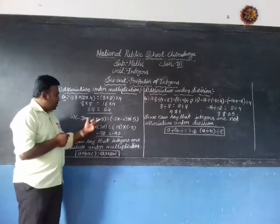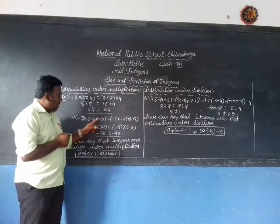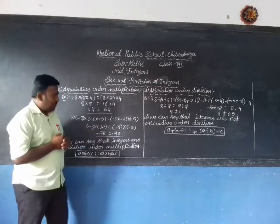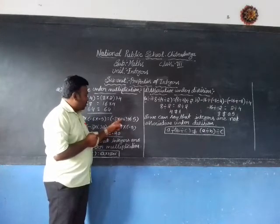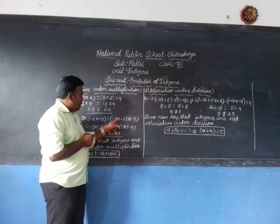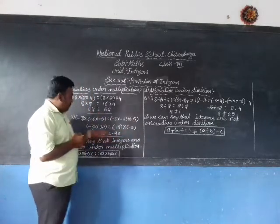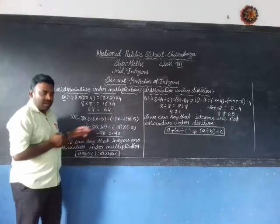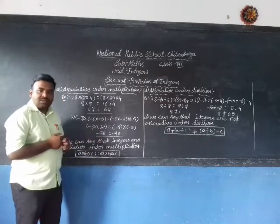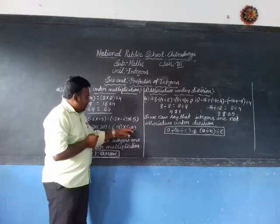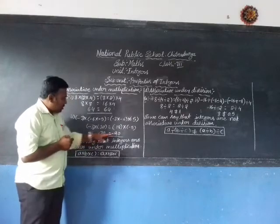On the left hand side, in the bracket: −6 × −5. Since minus × minus = plus, 6 × 5 = 30, so the result is +30. Then −3 × +30: plus × minus = minus, 3 × 30 = 90, so the result is −90. On the right hand side, in the bracket: −3 × −6. Since minus × minus = plus, 3 × 6 = 18, so the result is +18. Then +18 × −5: plus × minus = minus, so the result is −90.